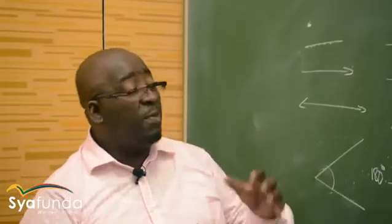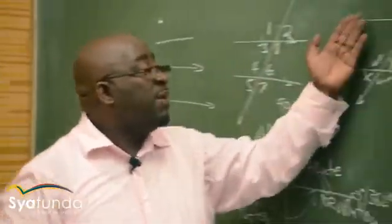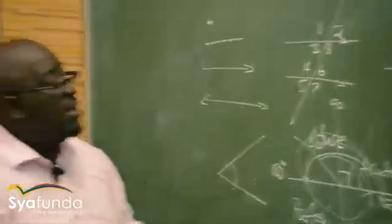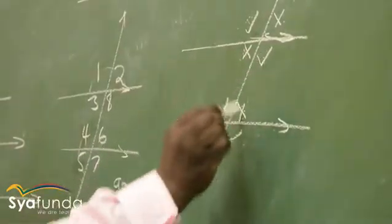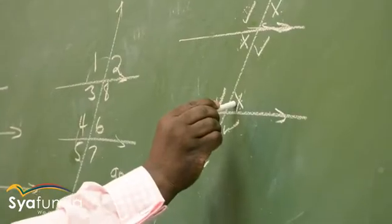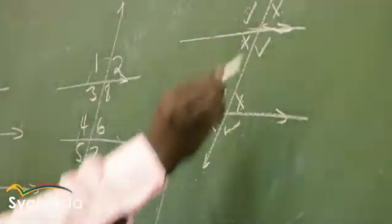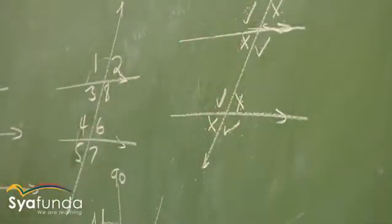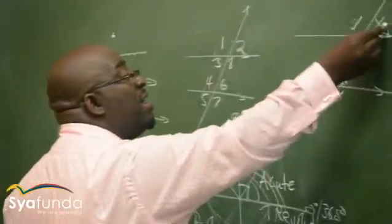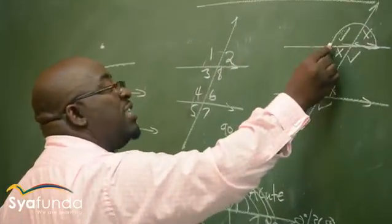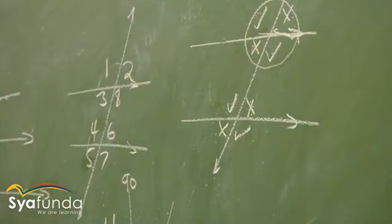For co-interior angles to apply, both angles must be on the same side of the transversal line. Co-exterior angles also share the same side and sum to 180 degrees. Remember, moving from 0° in a straight line gives 180°, and a full turn returns to 360° — the revolution.